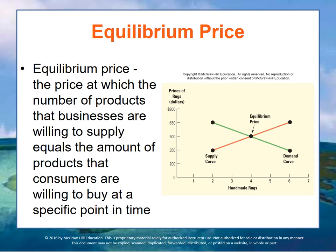The supply and demand curves intersect at a point where supply — when people are willing to sell at a price — meets the demand that people have to pay that price. So they're willing to buy that many at that price, and that price creates a balance, or an equilibrium, that is stable. The price where the number of products businesses are willing to supply equals the products that consumers are willing to buy is called the equilibrium price. In our rug example, the company is willing to supply four rugs at $500 each, and the consumers are willing to buy four rugs at $500 each. Therefore, $500 is the equilibrium price for a rug at that point in time, and most rug companies will price their rugs at $500, with some noise in the system around $500.